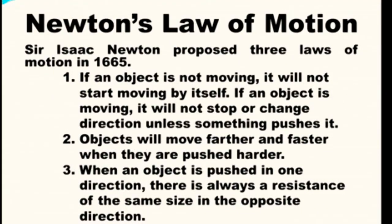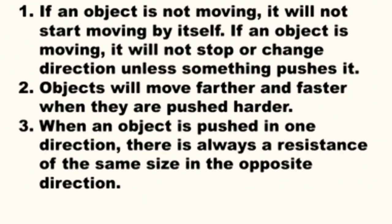Sir Isaac Newton proposed three laws of motion in 1665. First, if an object is not moving, it will not start moving by itself. If an object is moving, it will not stop or change direction unless something pushes it. Second, objects will move farther and faster when they are pushed harder. And third, when an object is pushed in one direction, there is always a resistance of the same size in the opposite direction.